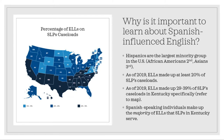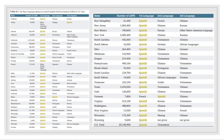Why is it important to learn about Spanish-influenced English? Hispanics are the largest minority group in the United States, with African Americans being the second largest and Asians being the third. As of 2019, across the US, ELLs made up at least 20% of SLPs' caseloads, and in states along the coasts and in the southern United States, including Kentucky, that percentage is much higher — ELLs made up 29 to 39% of SLPs' caseloads in Kentucky. Looking at a chart of the top three languages spoken by limited English-proficient students in each US state, we can see Spanish as the first language spoken by ELLs in every US state with the exception of Alaska, Hawaii, Maine, and Vermont.